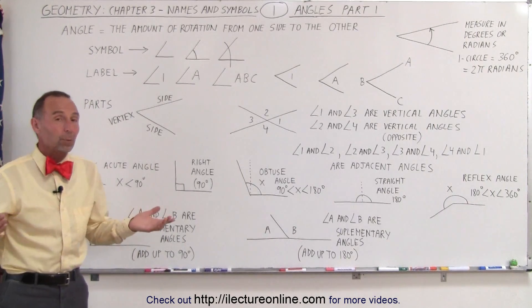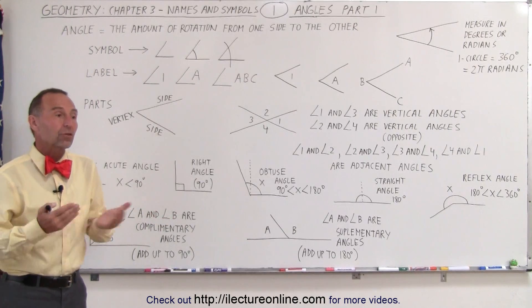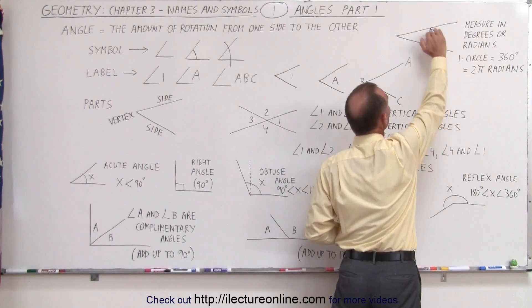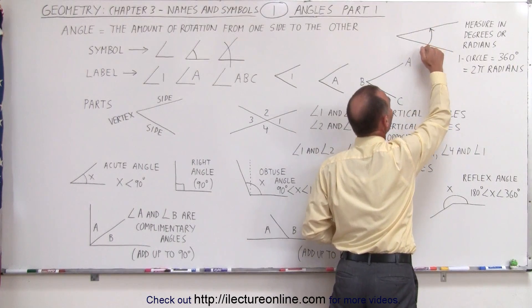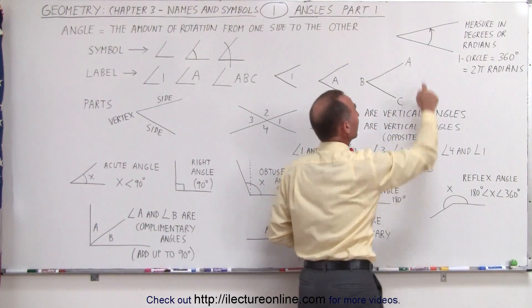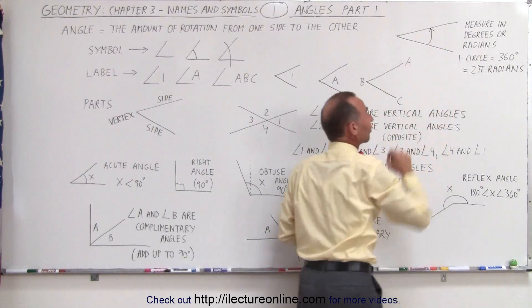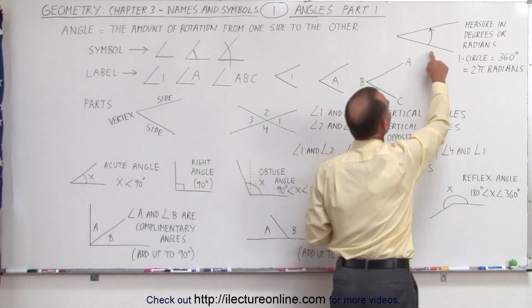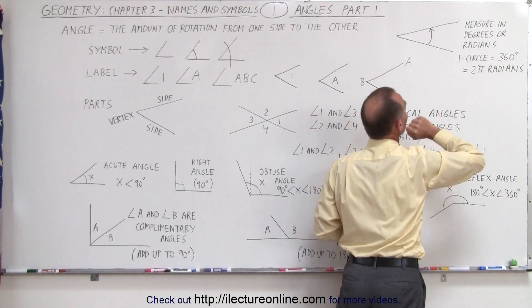So first of all, what is an angle? Well, it turns out an angle is the rotational distance between one side and the other side of the angle. These two lines here are considered the sides of an angle, and it's the angular distance, the rotational distance from one side to the other side that define the angle.